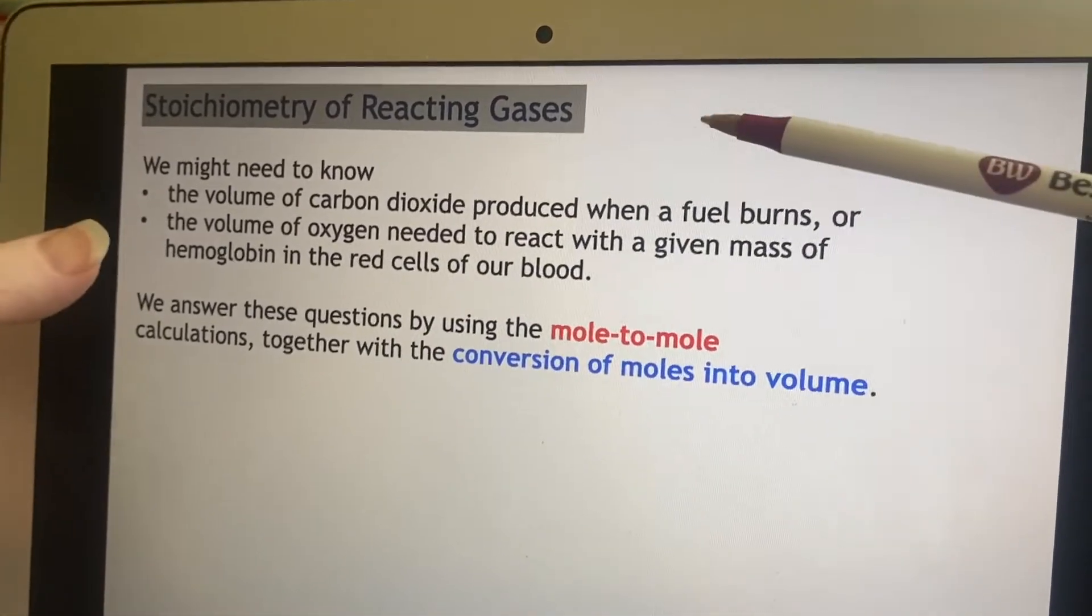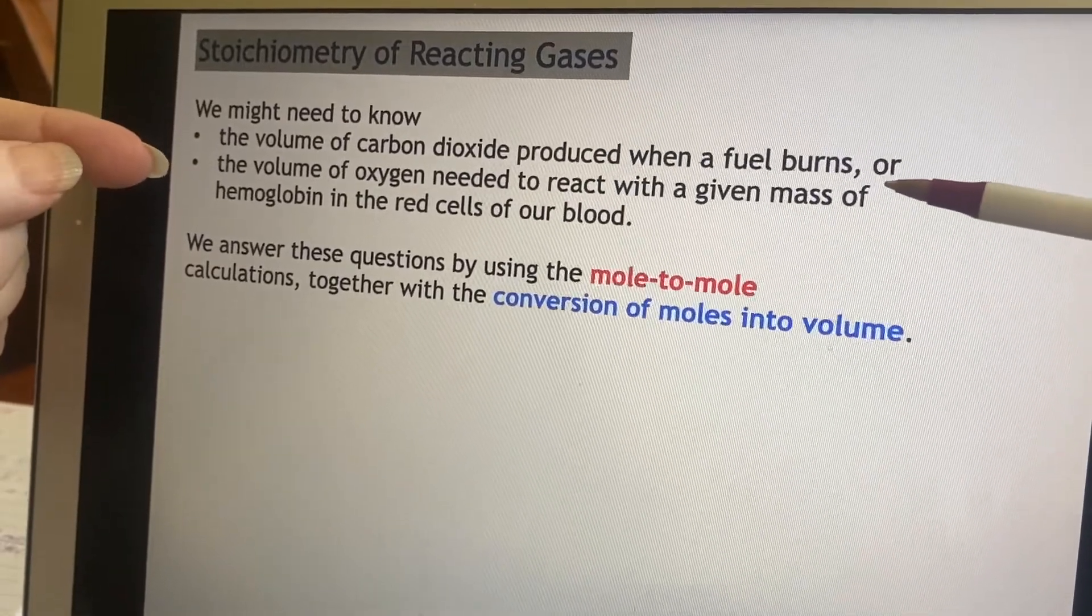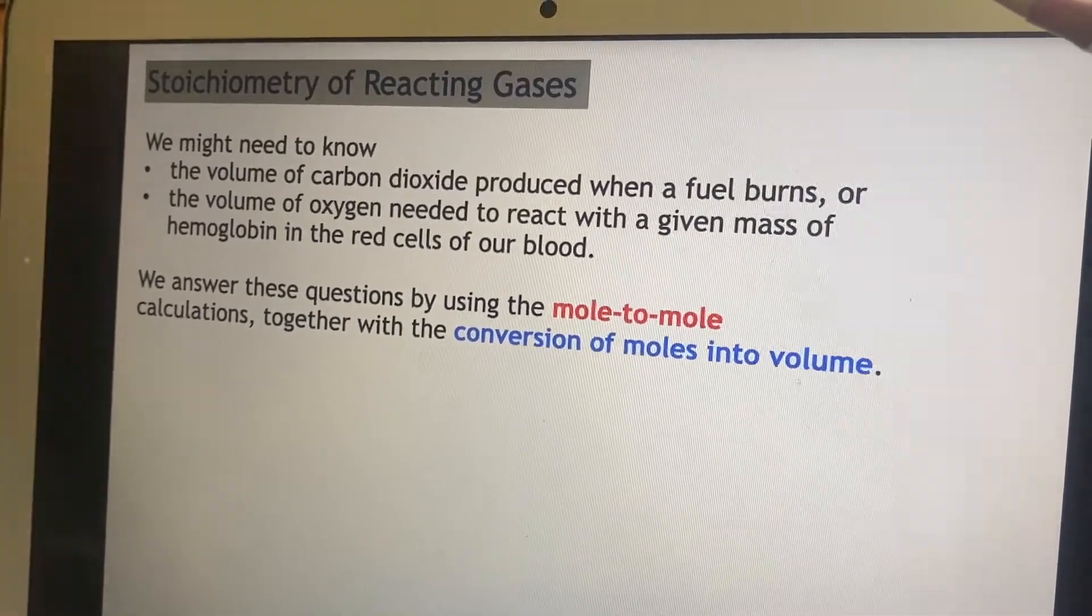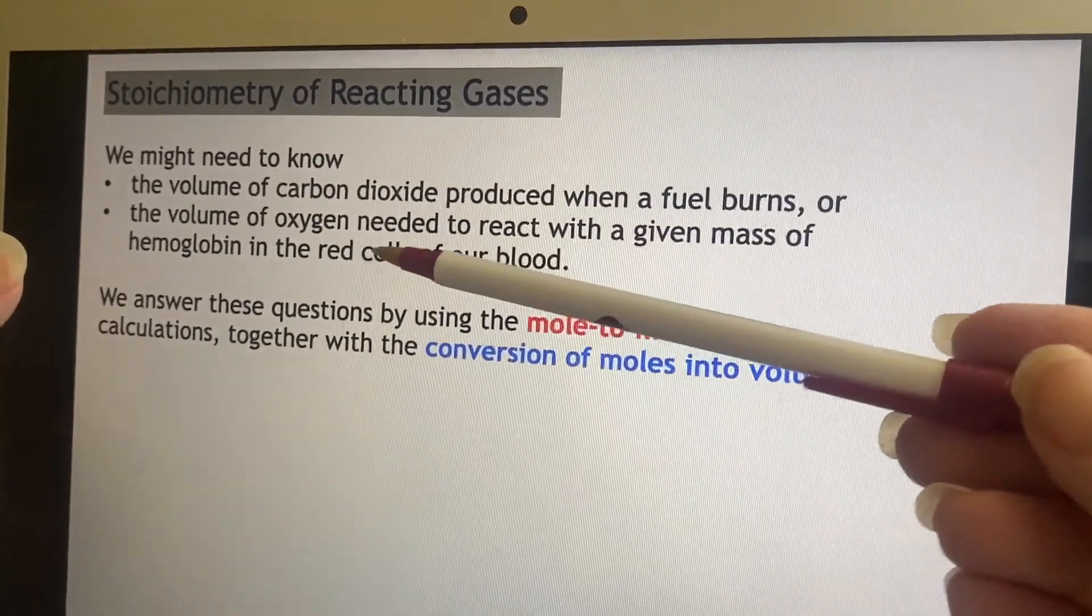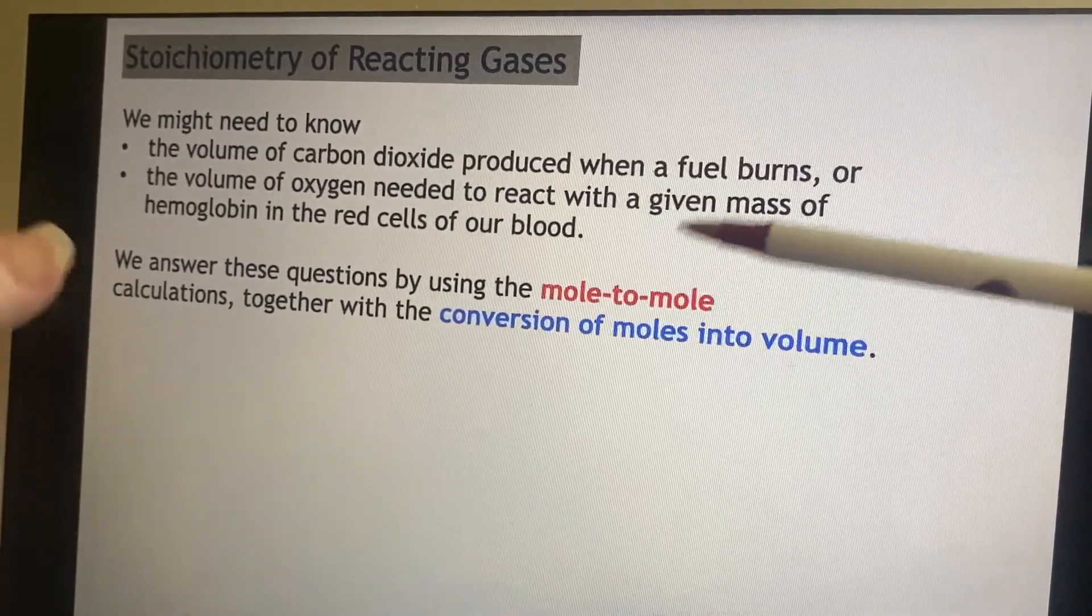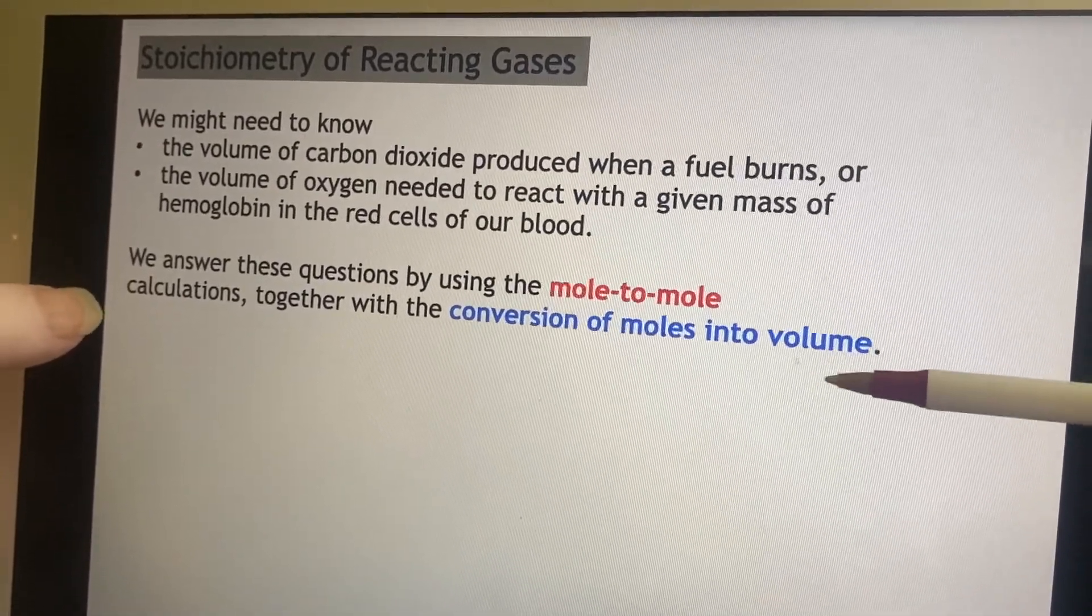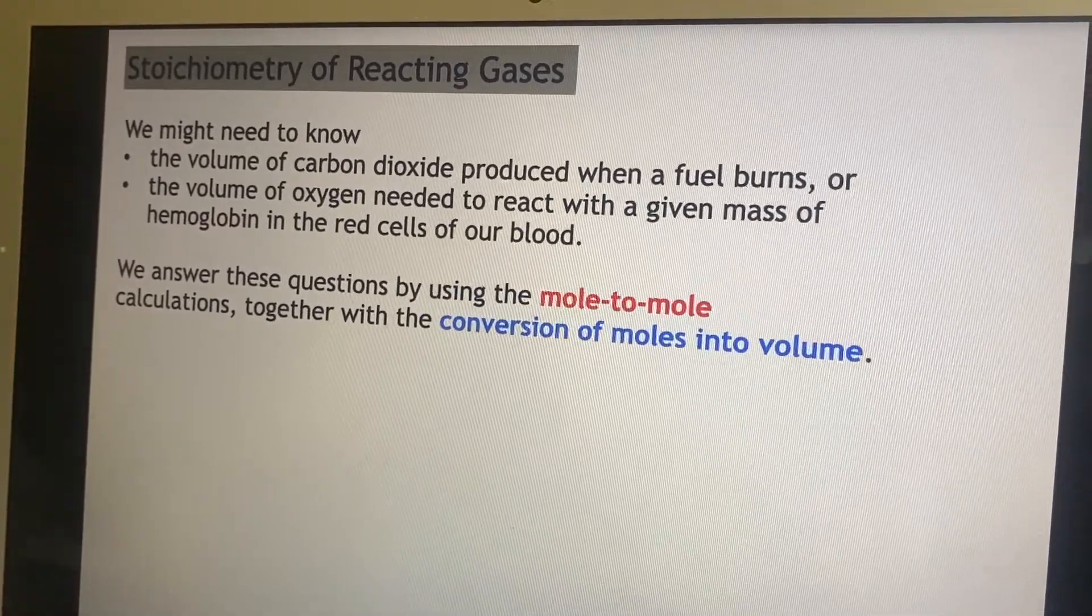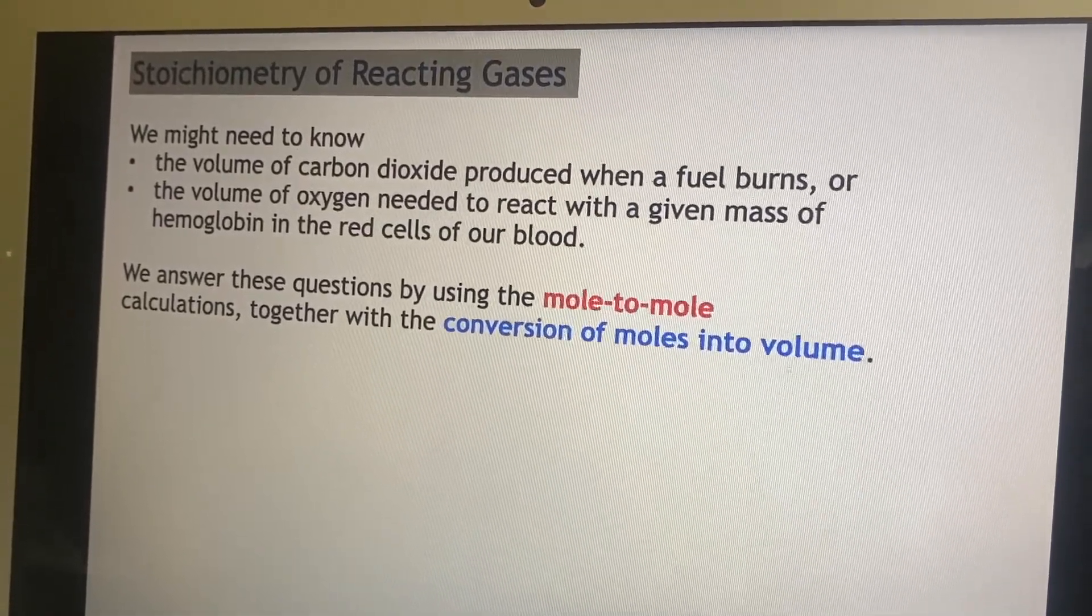Stoichiometry of reacting gases - what are we going to do with this? We might have a few possibilities. We want to know the volume of carbon dioxide when I've burned something, or the volume of oxygen, or the volume of a gas needed to react with hemoglobin in the red blood cells. As soon as they're talking about that sort of thing, we're going to be using stoichiometry again. After we have the number of moles, we'll convert them into volume because now we can do that. We've got PV equals NRT, that'll help us out every time.